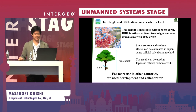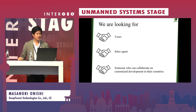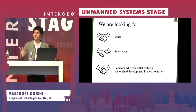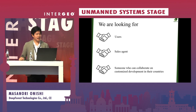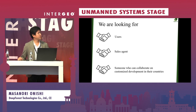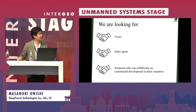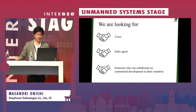For more use in other countries, we need development and collaborators. We are looking for users — you can use the software for two weeks for free with access to almost all tools. An annual license is needed for longer use. We are also looking for sales agents, as we are a very young company without connections in other countries. We are looking for collaborators on customized development — building local species identification models or estimation formulas for DBH, stem volume, and carbon stocks. If you can collaborate, we can offer good terms.